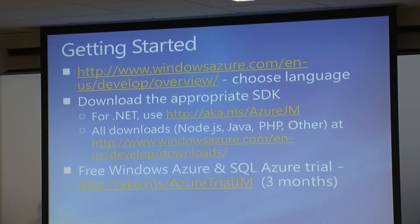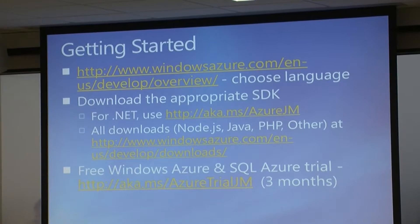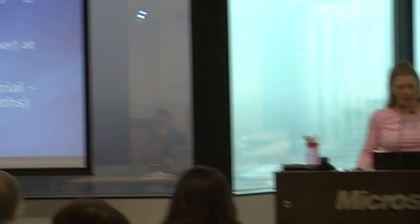There are hello world examples in each of the different languages. Choose your language on the Develop screen - .NET, Java, or whatever - and download the appropriate SDK. If you do choose to download the Azure SDK, I'd be very grateful if you'd use this link: aka.ms/AzureJM to download the .NET SDK. My manager in Chicago tracks downloads to measure what we're doing.